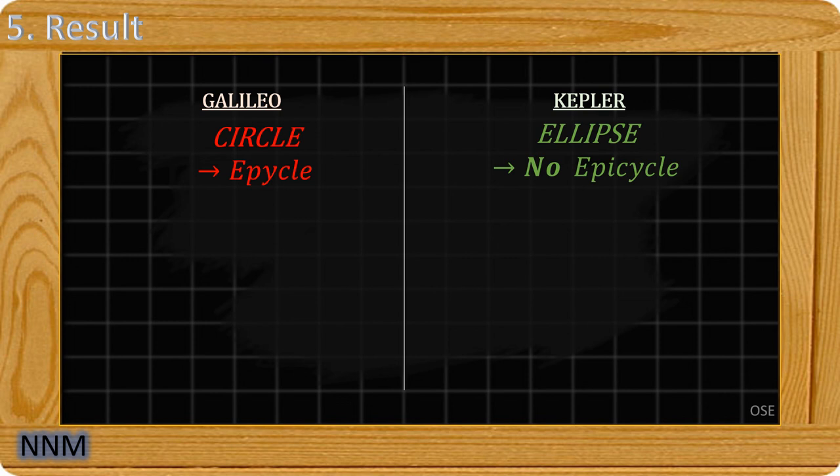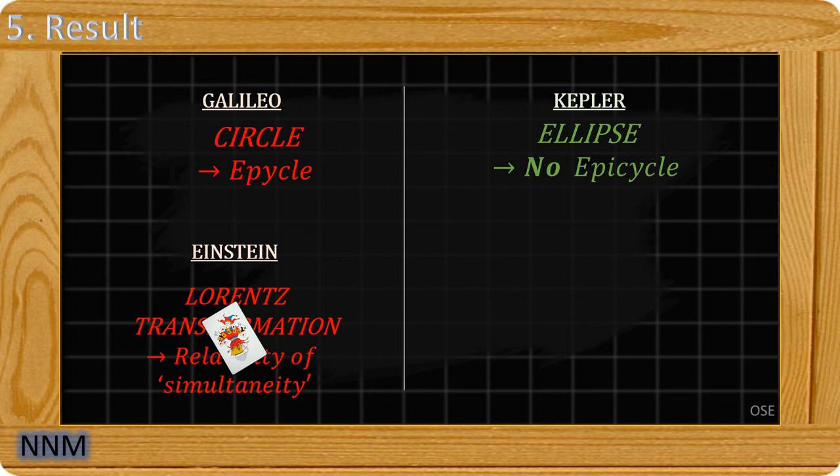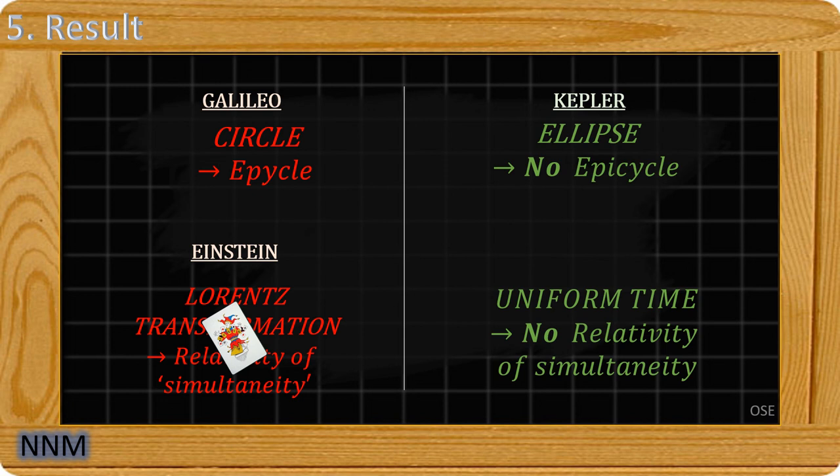Einstein wanted to use the Lorentz transformations. To remain coherent, it needed the relativity of simultaneity. By using a constant time, there is no longer any need for the relativity of simultaneity. You can read more about Neo-Newtonian mechanics in the link at the end of the video.